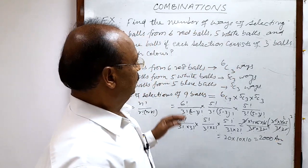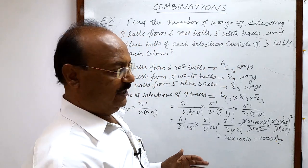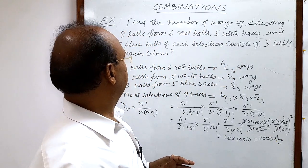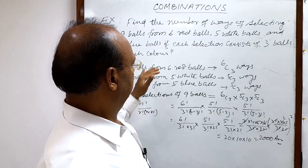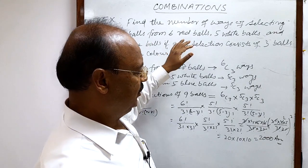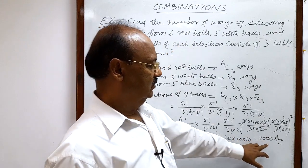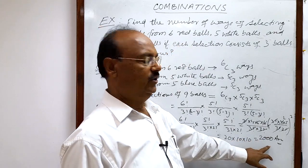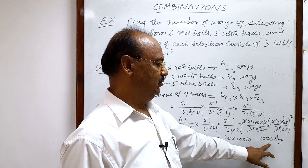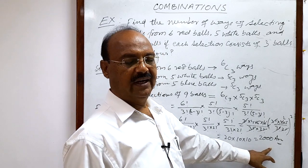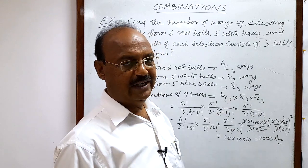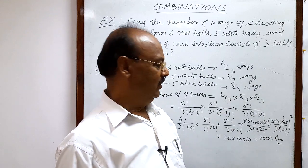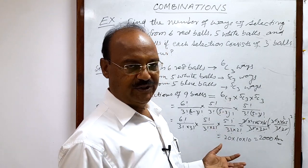So the total number of ways of selecting 9 balls under the given condition is 2000 ways. 2000 is the answer. Very interesting, very simple question. Hope you have understood it. Thank you.